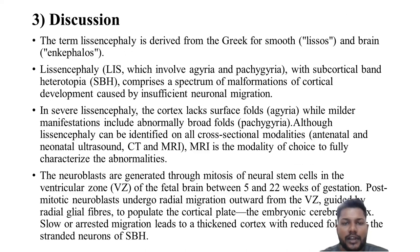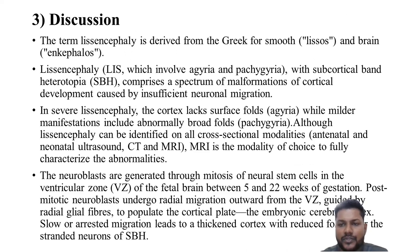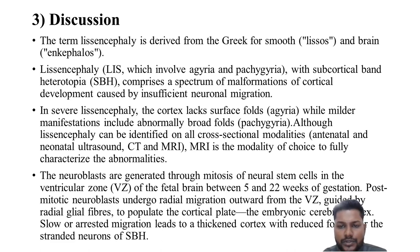The term lissencephalus is derived from the Greek for smooth — lysos — and brain — encephalus. Lissencephaly, which involves agyria and pachygyria with subcortical band heterotopia, encompasses a spectrum of malformation of cortical development caused by insufficient neural migration. In severe lissencephaly, the cortex lacks surface folds — agyria — while milder manifestations include abnormally broad folds — pachygyria.